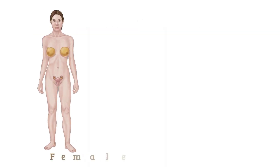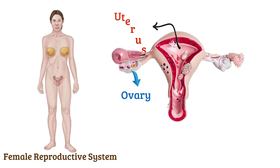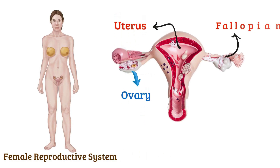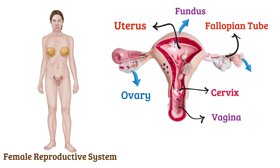Female reproductive system: ovary, uterus, fallopian tube, cervix, vagina, fundus, fimbria.